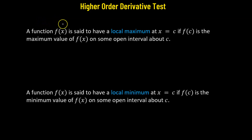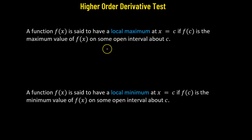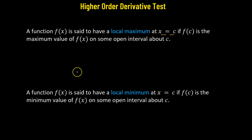In today's lecture, we will discuss higher-order derivative tests. This test will be used to check whether a function is at its local maximum or local minimum. There could be multiple maximum and minimum values, but we are going to check locally at a particular point — that means around x equals to c — and see whether that point has a local maximum or a local minimum.